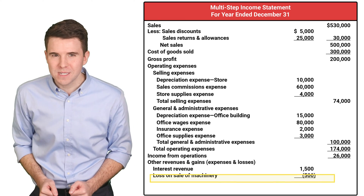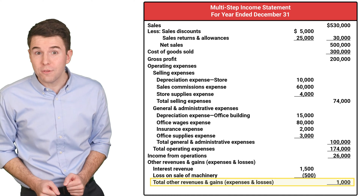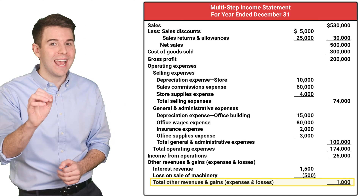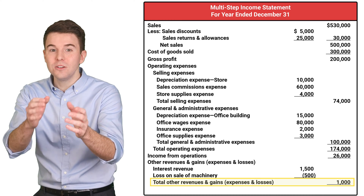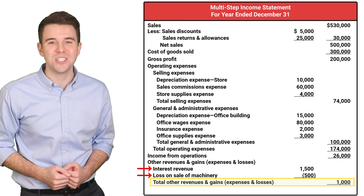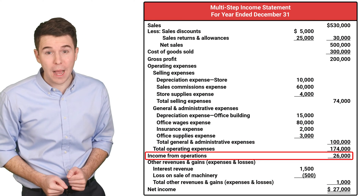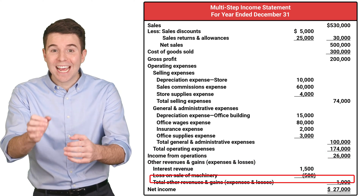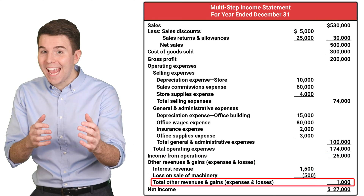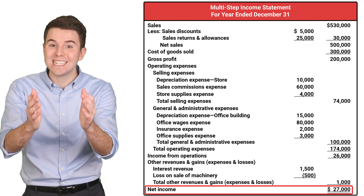Back to our multi-step income statement. We finish it by recording other revenues, gains, expenses, and losses. This includes interest revenue and loss on sale of machinery. To compute net income, we take income from operations and add total other revenues, gains, expenses, and losses to get net income.